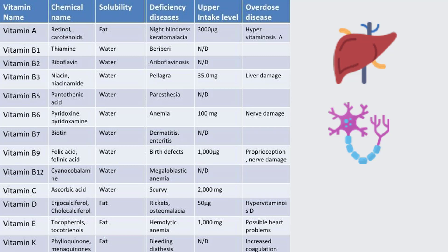Vitamin A is retinol, and its deficiency causes night blindness. Vitamin B1's chemical name is thiamine, and the deficiency disease is beriberi — a very famous disease. Vitamin B2 is riboflavin. Vitamin B3 is niacin, which causes pellagra. Vitamin B5 is pantothenic acid, and its deficiency causes paresthesia.